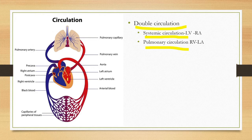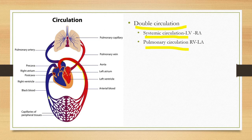The pure blood from the left ventricle is pumped through the carotico-systemic aorta and divides into arteries to supply all parts of the body. The main function of systemic circulation is to supply nutrients and oxygen to the body. After supply, the impure blood is carried back to the heart through the post-caval vein and pre-caval veins.